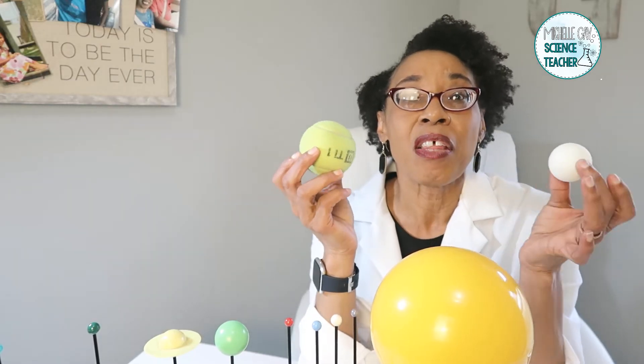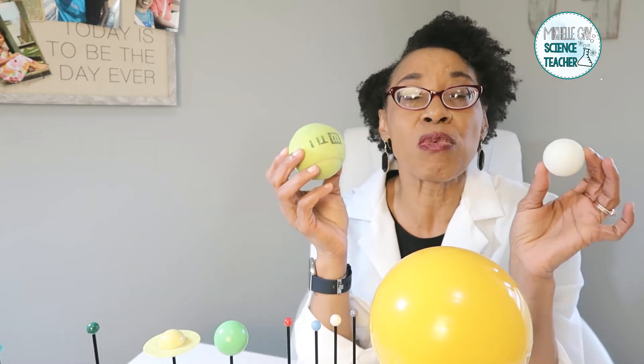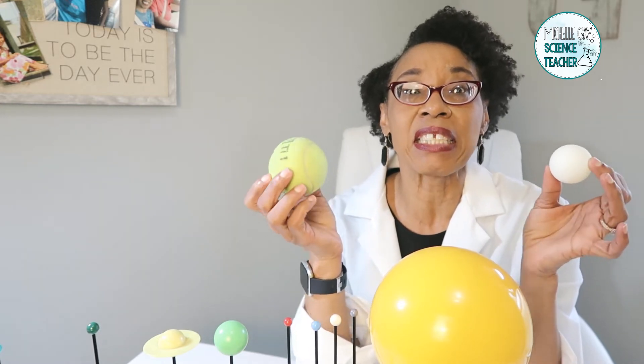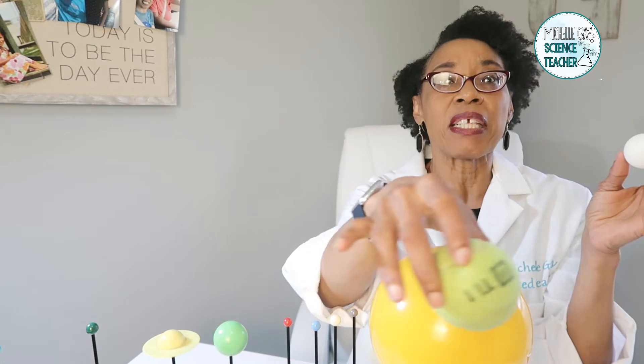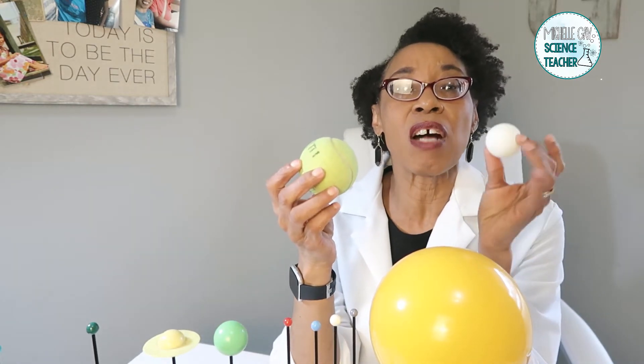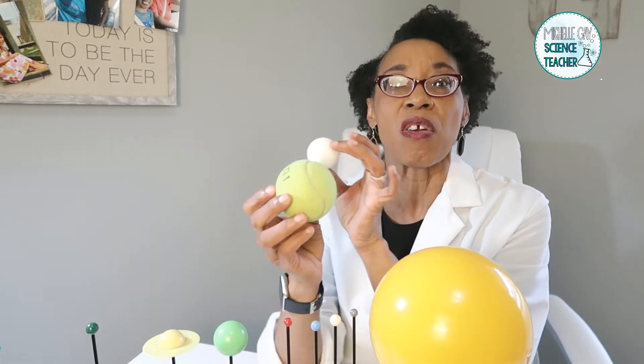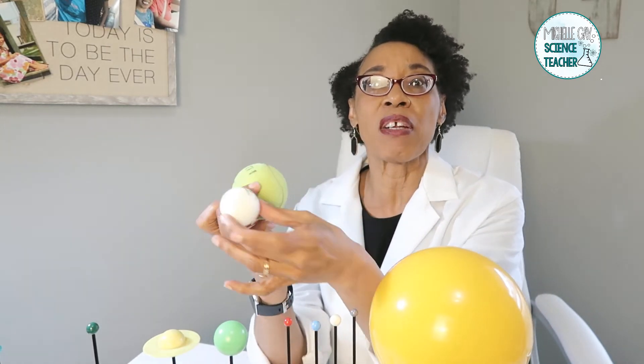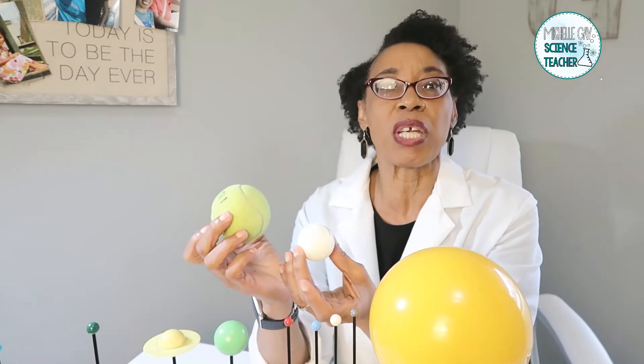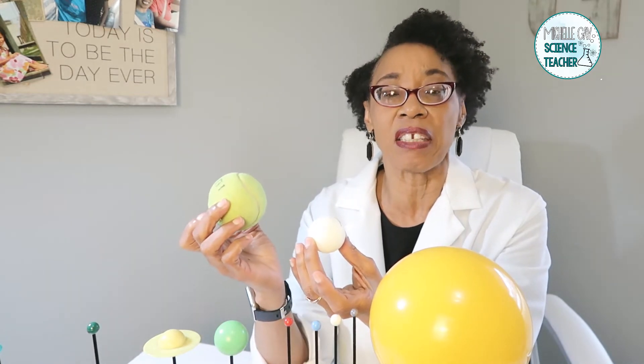While the Earth is rotating on its axis and orbiting the sun, the moon is also rotating and orbiting around Earth. As it orbits around Earth, it passes through between Earth and the sun.